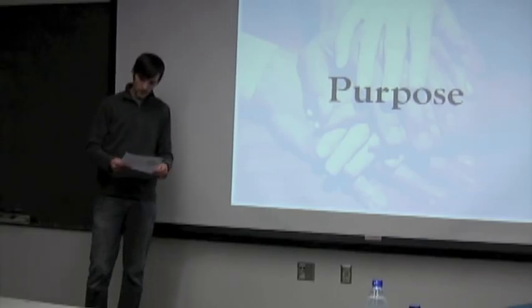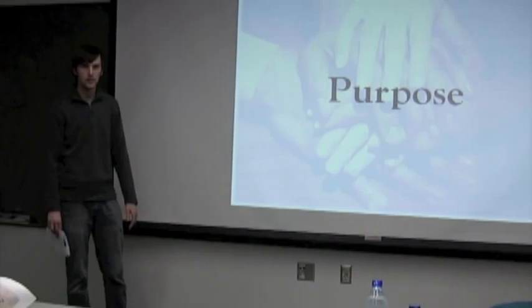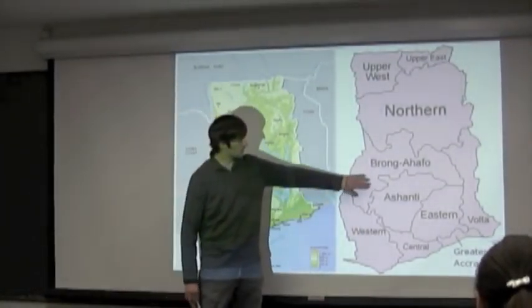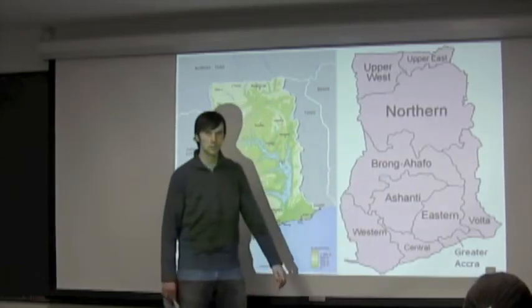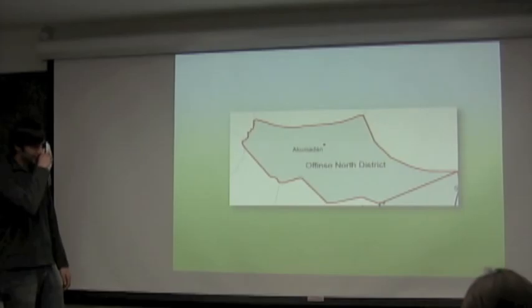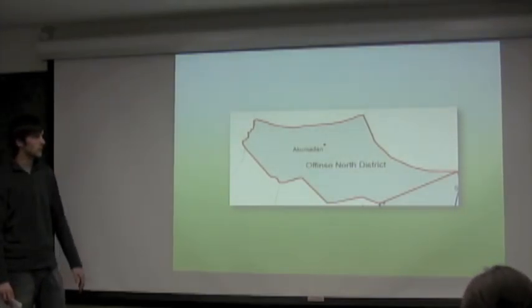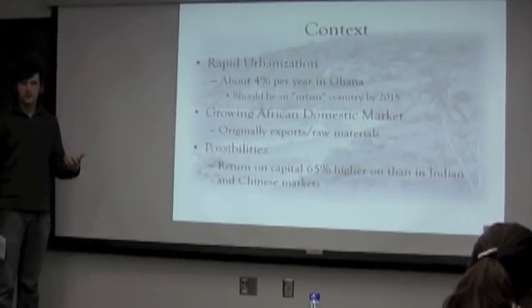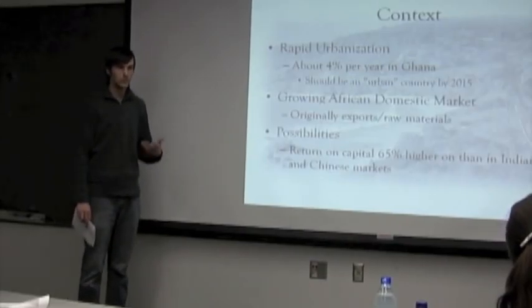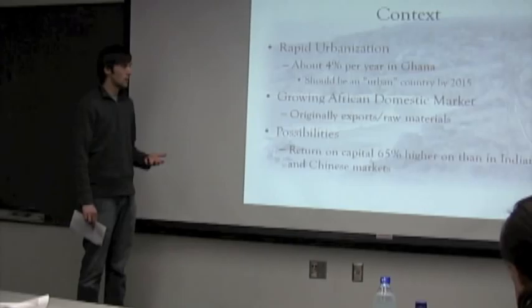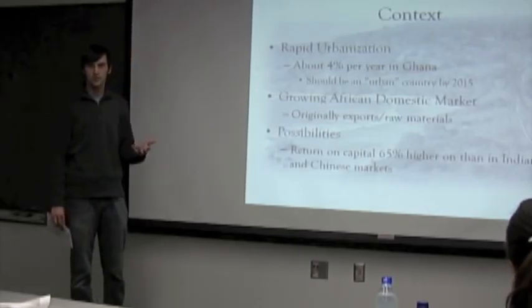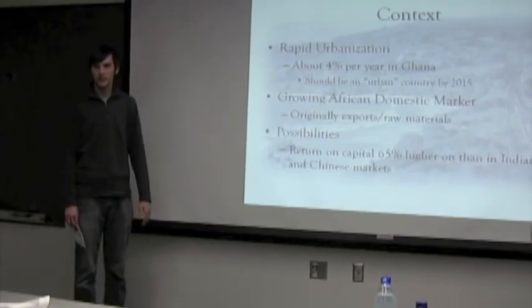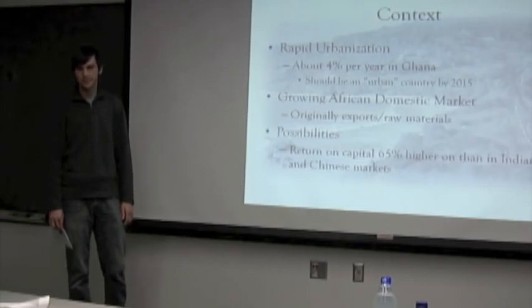First I want to talk about the purpose and establish a sense of context. As many of you know, this is Ghana, and the region we're working in is right here in the northern part of the Ashanti region — the Afinso North District. The largest city is Kumadan in the Afinso North District. Africa is experiencing very rapid urbanization, and we believe as planners that you can address this problem through effective planning. In Ghana, they're experiencing about 4% population increase per year, which is rather steep, and most projections set Ghana becoming an urban country by 2015 — which is very, very soon.